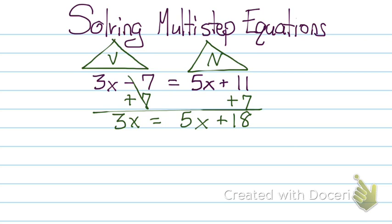So the opposite of positive 5x is negative 5x. So we're going to go ahead and subtract 5x from both sides. And that leaves us with 18 in the number house. And 3x minus 5x gives us negative 2x.